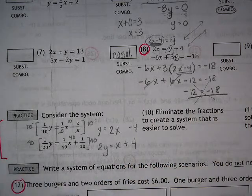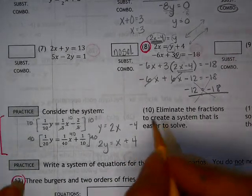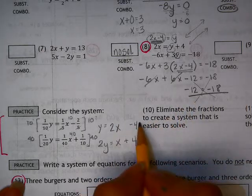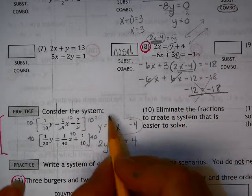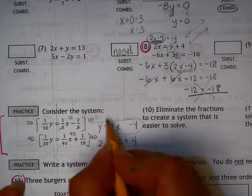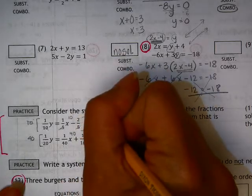So now, we need to go ahead and eliminate them. So you have some options. You can plug this guy into the y. Or I'm going to go ahead and just multiply through this by a negative 2.